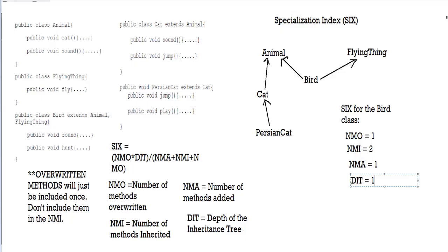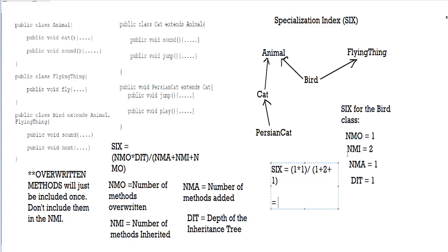All that's left is to calculate the specialization index. S6 is basically equal to NMO multiplied by DIT, which is 1 times 1, divided by NMA plus NMI plus NMO, which is 1 plus 2 plus 1. This equals 1 divided by 4, which is equal to 0.25. You always have to write S6 as a percentage, so 0.25 means 25%. That is the specialization index value for our bird class.